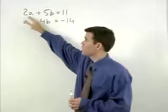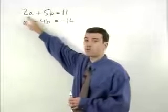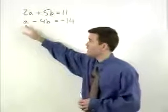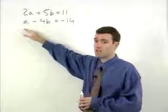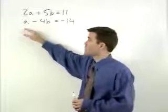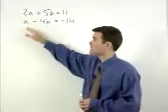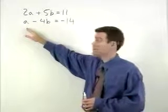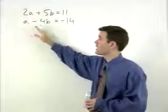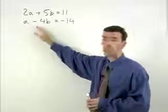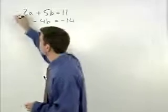Notice that we have a 2a in our first equation. If we had a negative 2a in our second equation, then the a's would cancel out. In order to create a negative 2a in the second equation, we simply multiply both sides of the second equation by negative 2.